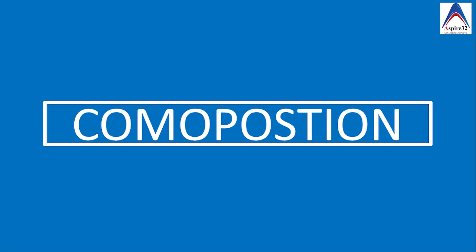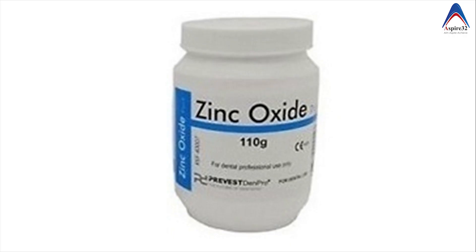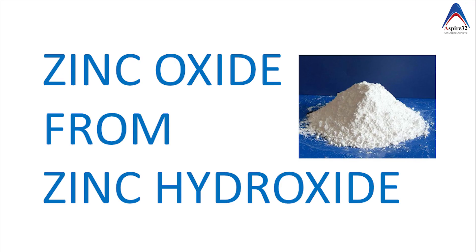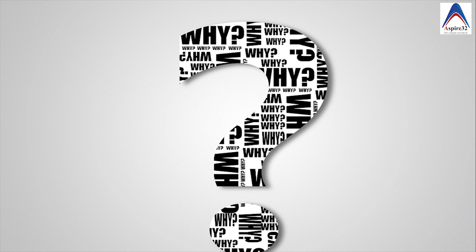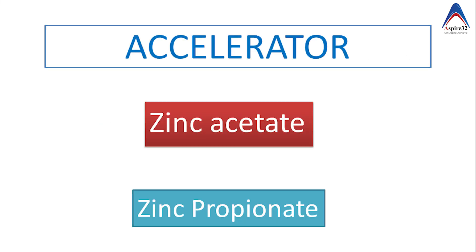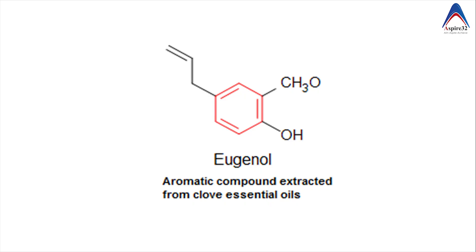Let's discuss the composition of the cement. The powder has zinc oxide as a major component. Although zinc oxide can be obtained from various materials, it is generally obtained from heating zinc hydroxide, because the powder obtained this way is found to be more reactive. Zinc acetate and zinc propionate are also added to accelerate the setting reaction. The liquid consists mostly of eugenol, which reacts with the powder because it has a benzene ring that is reactive with zinc oxide.